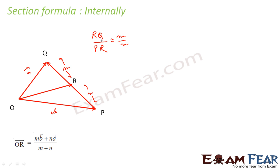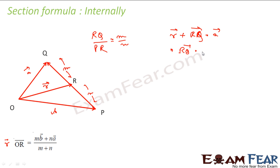Let us prove this. I am told that M by N equals RQ by PR, so we need to find RQ vector and PR vector. For RQ vector: in this triangle, R vector plus RQ vector equals A vector, so RQ vector equals A vector minus R vector. For PR vector: in this triangle, B vector plus PR vector equals R vector, so PR vector equals R vector minus B vector.